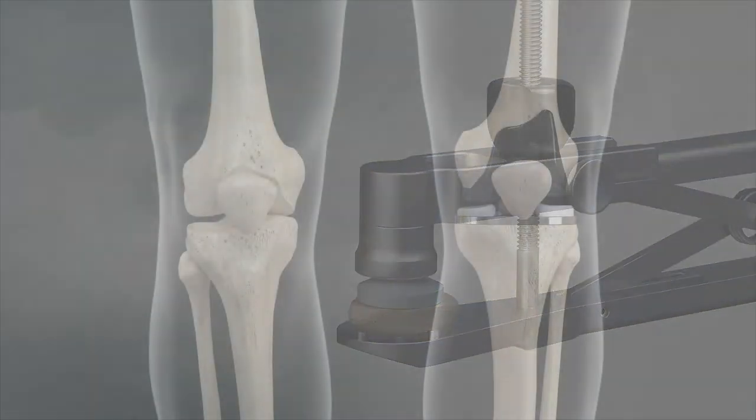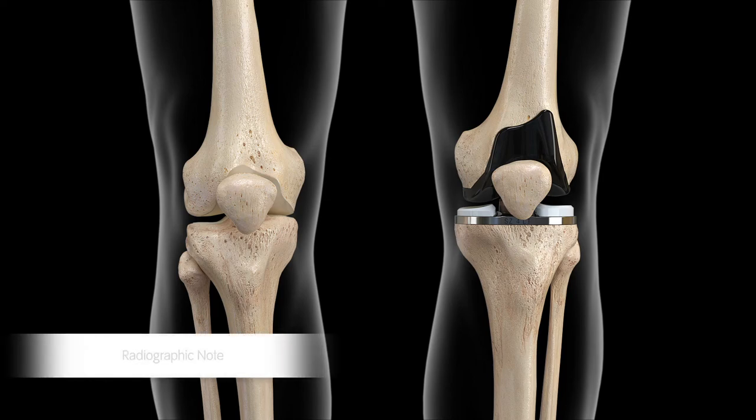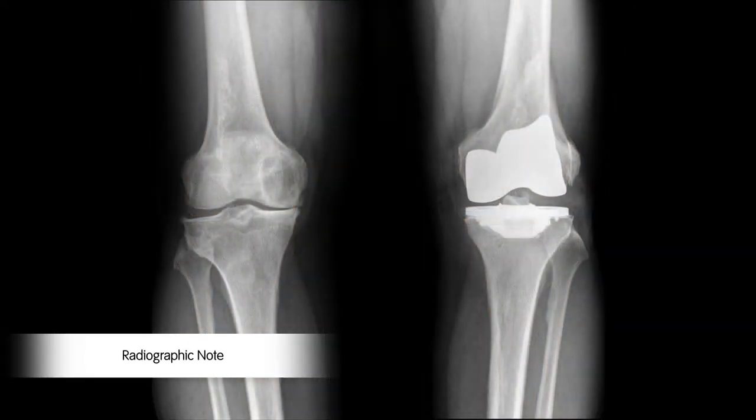Close the arthrotomy by placing three Vicryl sutures at the superior border of the patella, just distal to the VMO. A stitch is placed to close the VMO fascia. The remainder of the arthrotomy is closed in the standard fashion. Perform routine subcutaneous and skin closure.